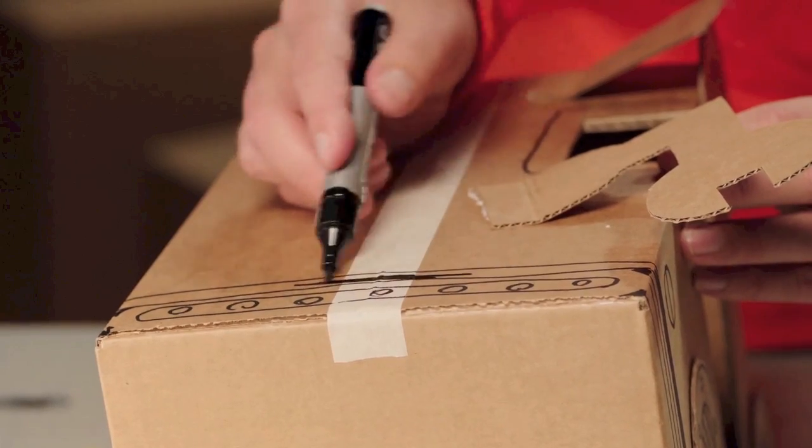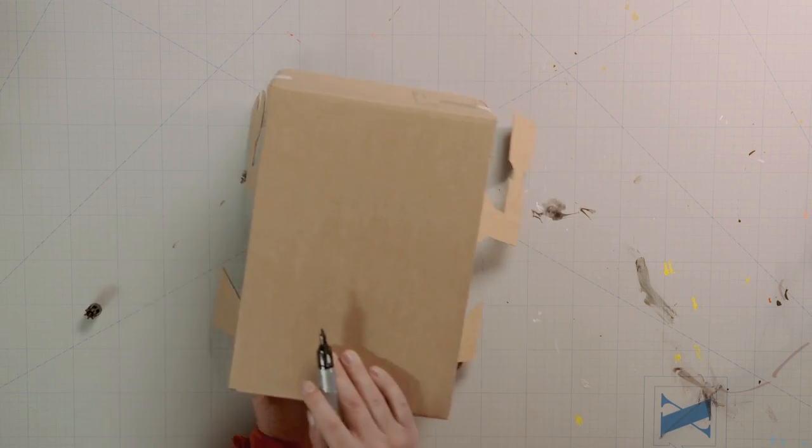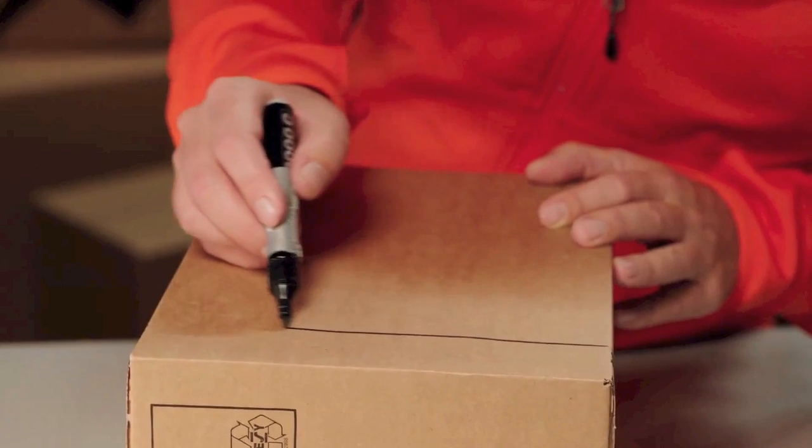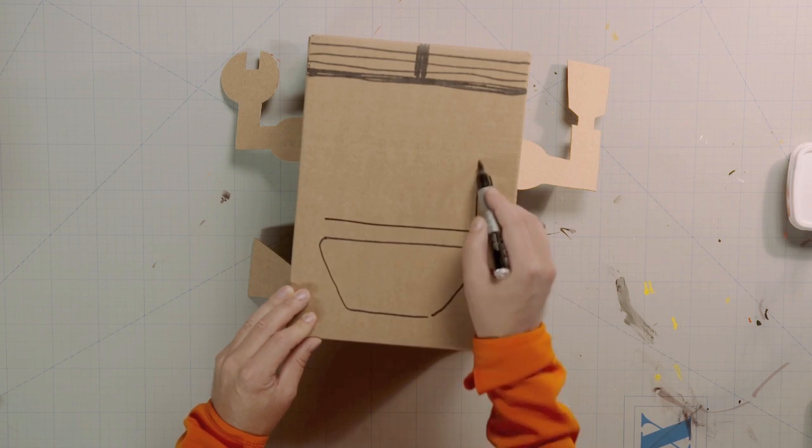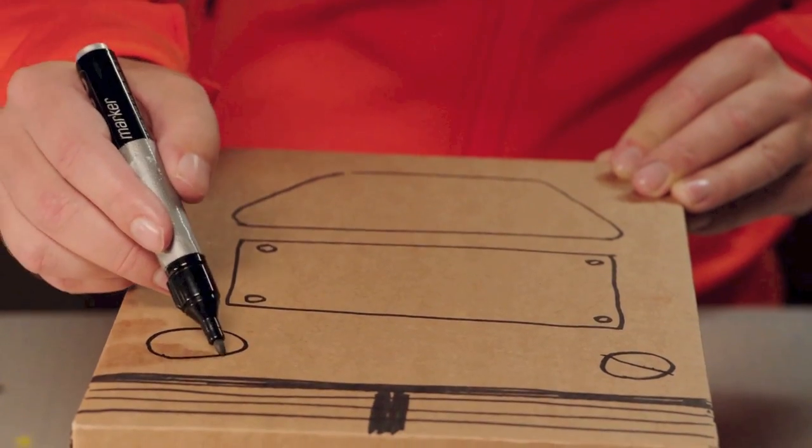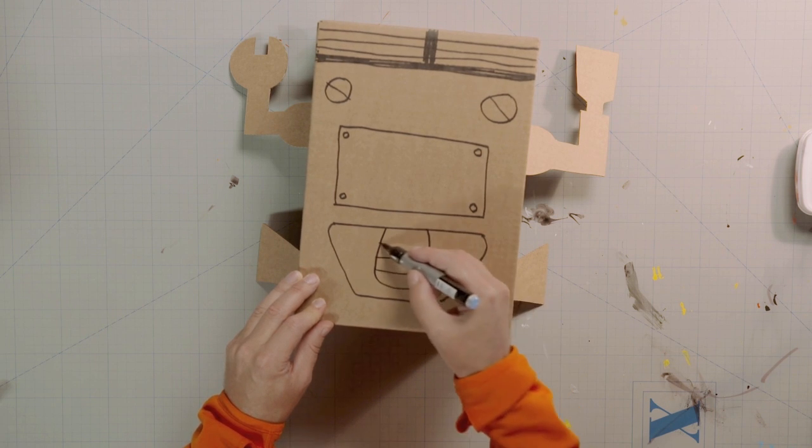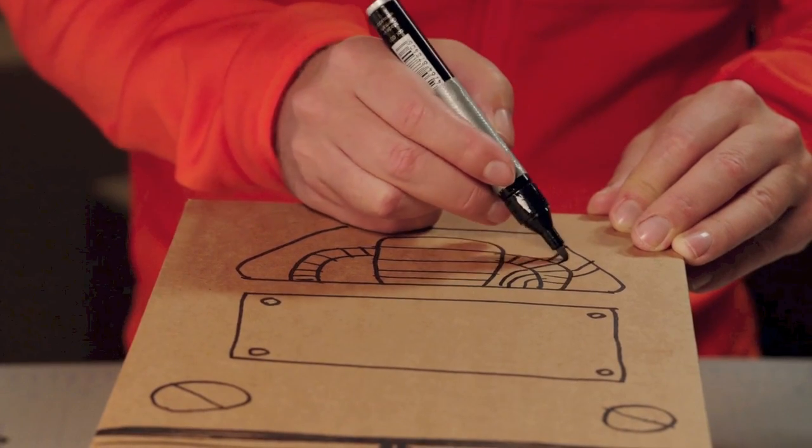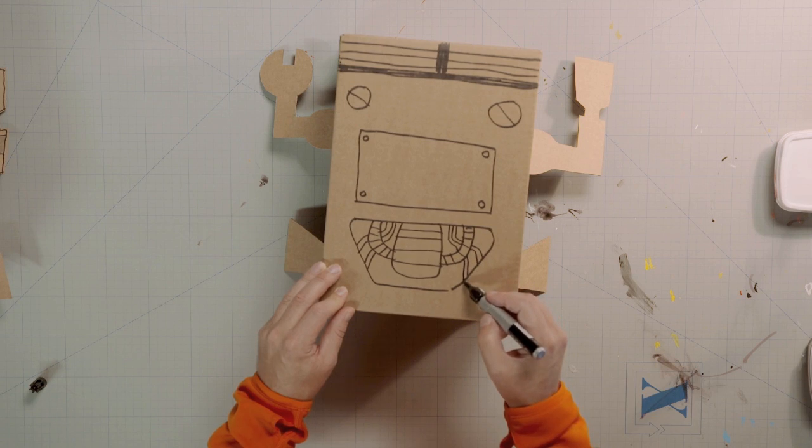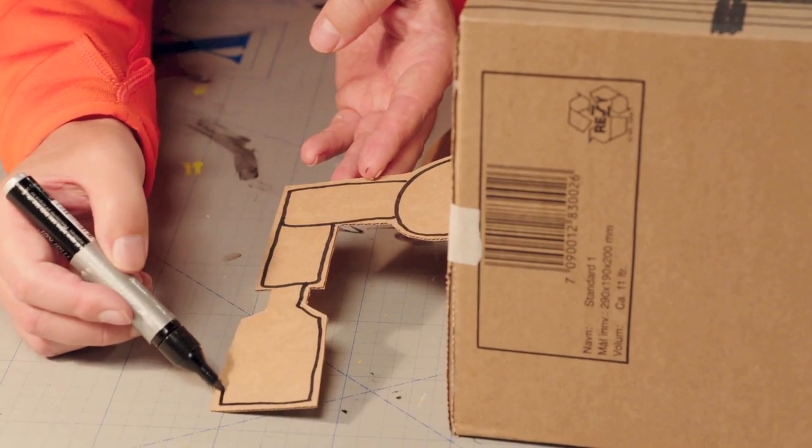I'm using a marker pen, but you could also use a thin brush with black paint. Finally, I'm going to draw an open panel, so we can see some of the strange machine parts inside the robot. Tubes, cables, all kinds of stuff. It's good to draw on the back of the robot parts as well, so it looks good from all angles.